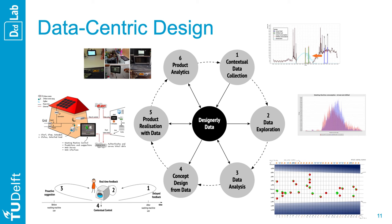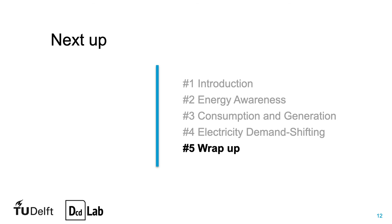So let's recap. This time, we had a data-driven simulation running a demand-shifting algorithm. Exploring the results, we got clear indication of the shifting potential. Compiling all this data in a personal visualization, we co-analyzed data with participants to better understand washing machine routines. We conceptualized these insights into four time-dependent, data-driven interventions and validated our hypothesis that proactive suggestions and contextual controls are the most promising design directions. That's it for this third iteration — in the final video, I invite you for a wrap-up of this case study and a reflection on the data-centric design approach.